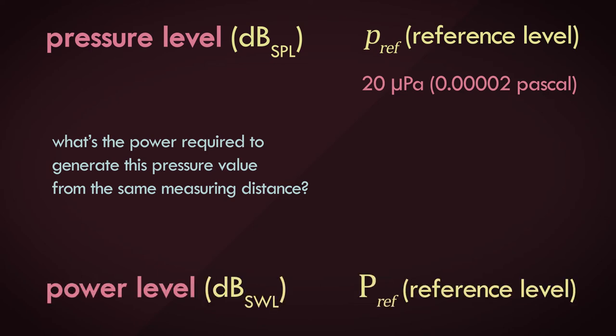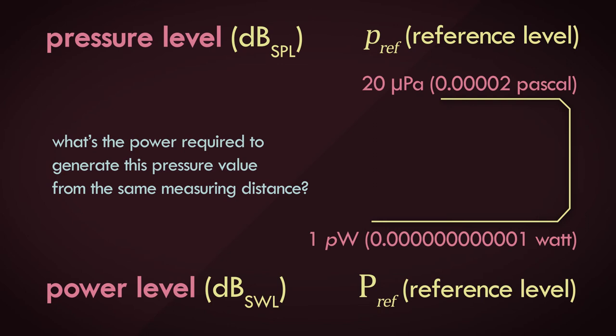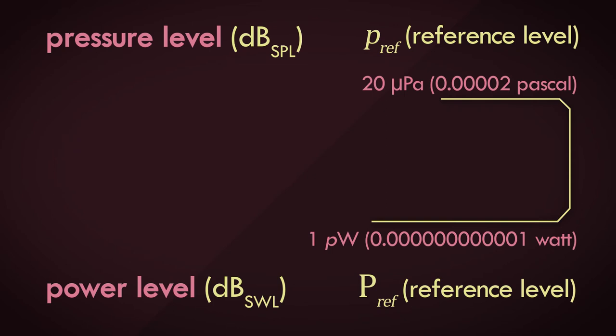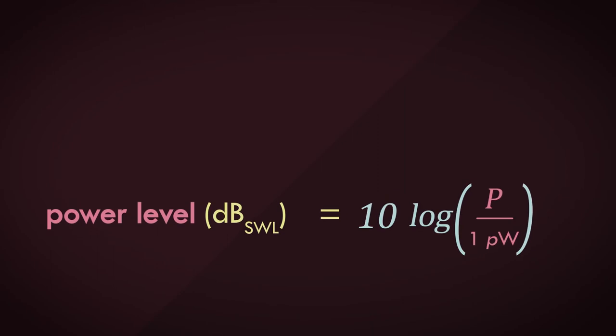The complicated answer to this question is 10 to the power of minus 12 watts, or 1 picowatt, which is a tiny infinitesimal value, but that's the value we need to plug in as the reference. So there we go, the formula for sound power level in decibels, or SWL.